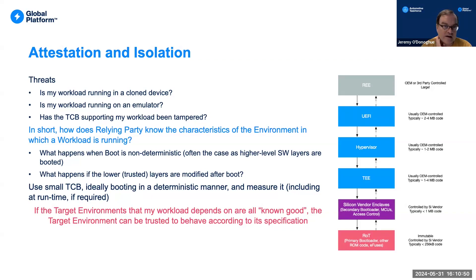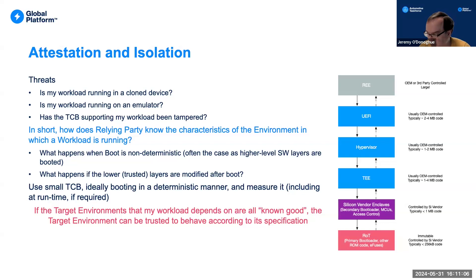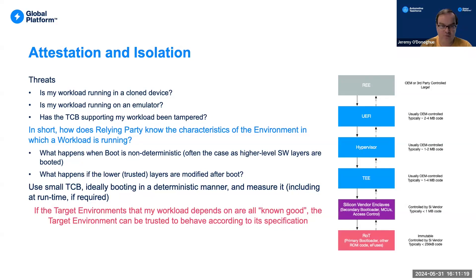In a more realistic attestation chain, at each point the layer below has verified the layer above. If all layers have good values, we can be pretty confident about our target environment, at least at boot time. The biggest problem is managing this large set of trustworthy golden measurements, because they will change with every firmware update. If you are a car vendor or phone vendor with millions of devices, that's an awful lot of possible golden values you might need.